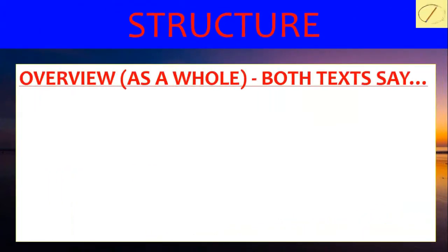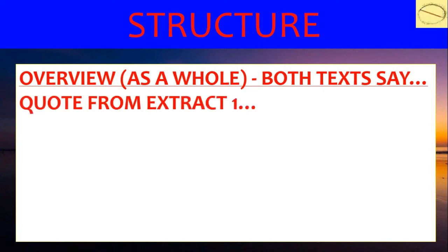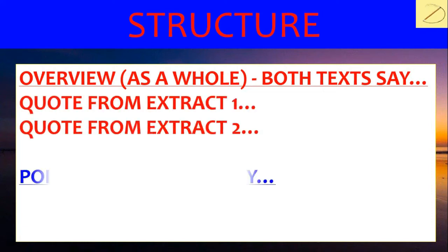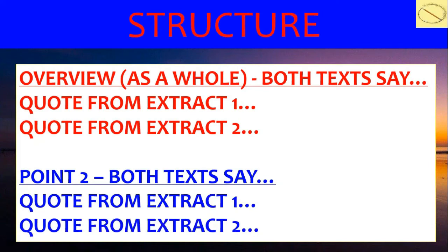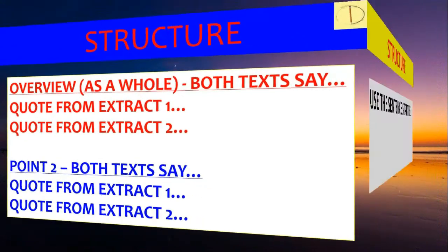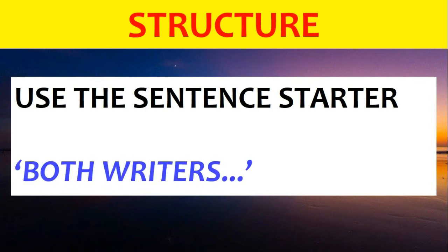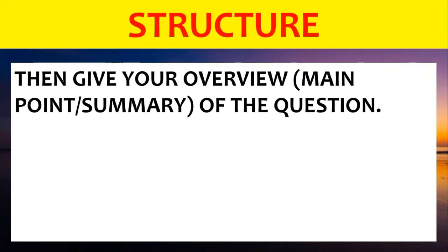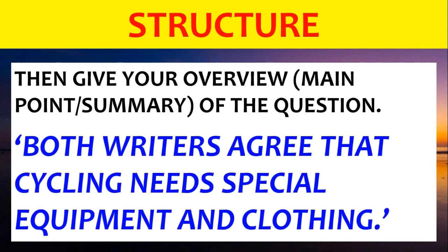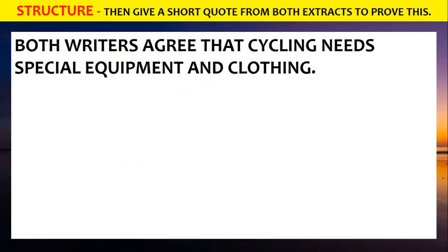How are we going to structure our answer? Give an overview as a whole — say what you think both texts agree with or disagree with — then a quote from each one, and then the same for the second point. You need to make two main points — two main things you've noticed in the extracts, things they have in common or that are different, mainly similar. Use the sentence starter 'both writers,' then give your overview and the main point of the question. This question is really about picking out information, so you don't need to say 'this suggests' or anything like that.